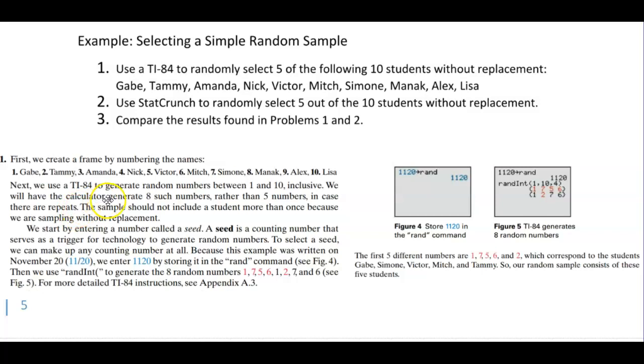Next we're going to use a TI-84 to generate random numbers between one and ten inclusive. We will have the calculator generate eight such numbers rather than five in case there are repeats. The sample should not include a student more than once because we are sampling without replacement.